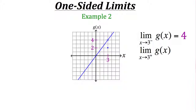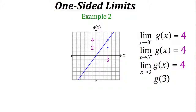The limit of our function as x approaches 3 from the right side: coming from the positive x direction toward x equals 3, we reach the same area, so the limit from the right is also 4. Since both one-sided limits are equal, the overall limit as x approaches 3 is 4. When we go to x equals 3 on the graph, however, the output is 2.